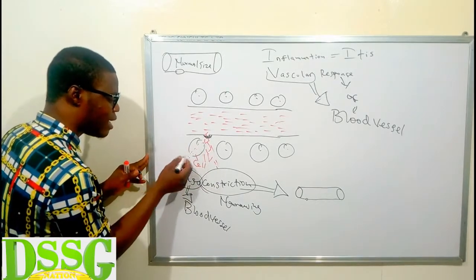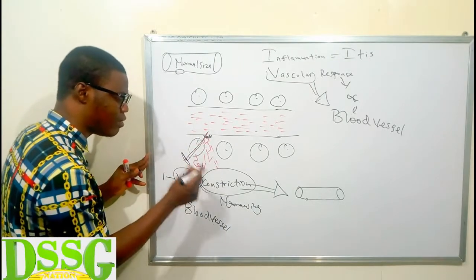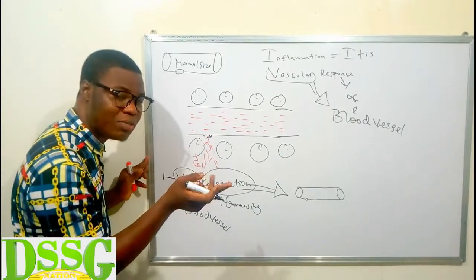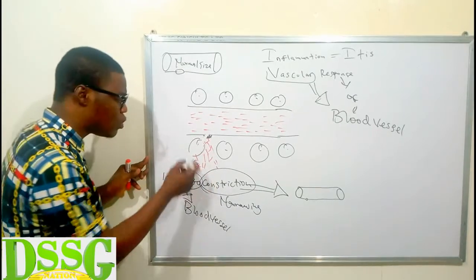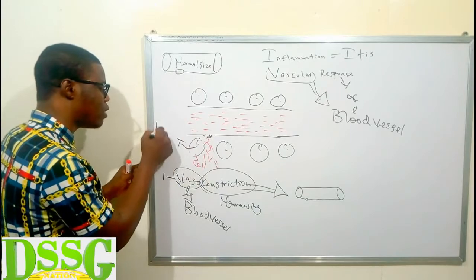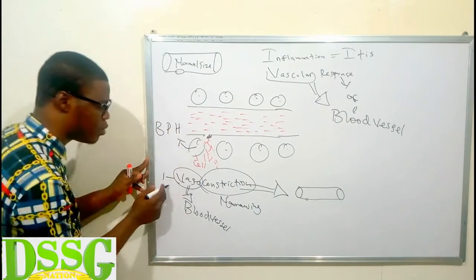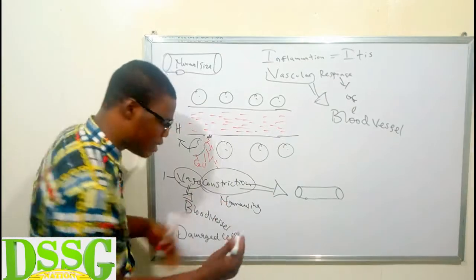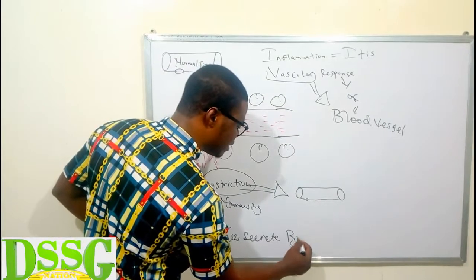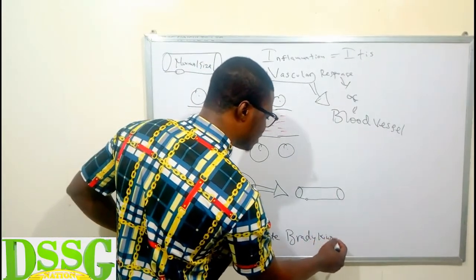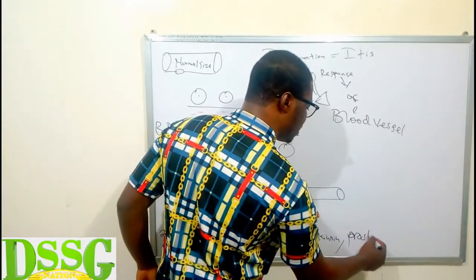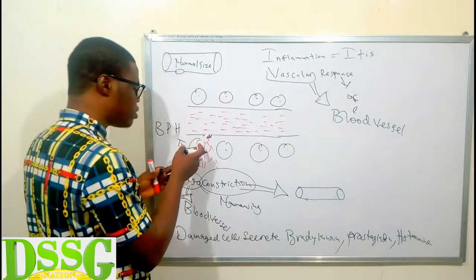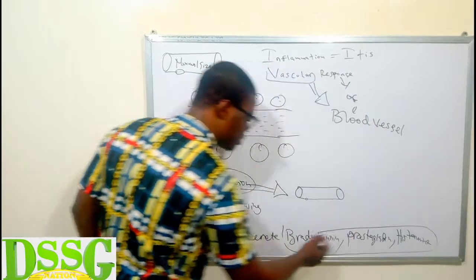After vasoconstriction, the damaged cells are going to secrete three things I call BPH: bradykinin, prostaglandin, and histamine. These damaged cells will secrete all these things, and they are called vasoactive mediators. The 'P' in prostaglandin reminds us that prostaglandin is responsible for the sensitization of pain.